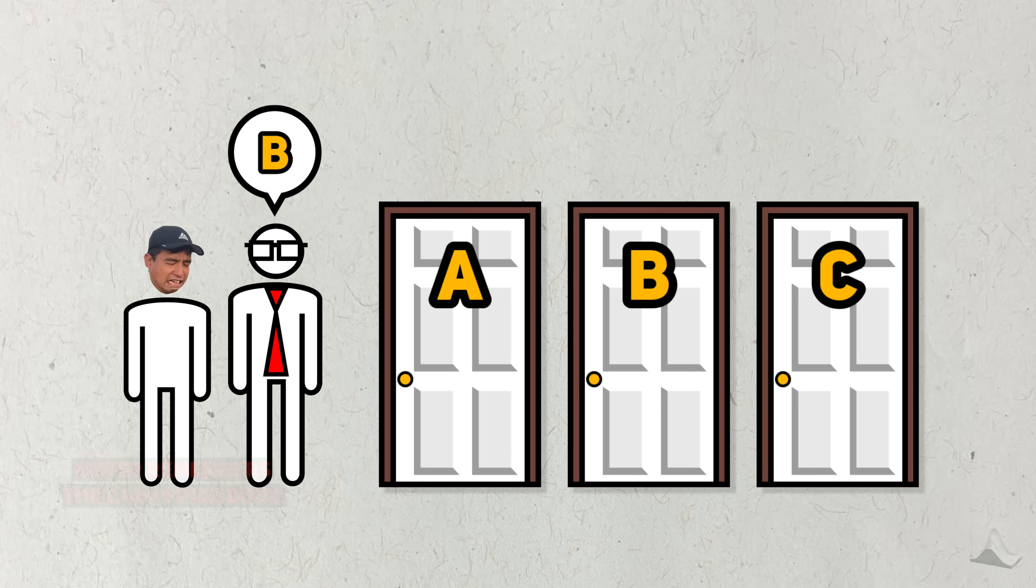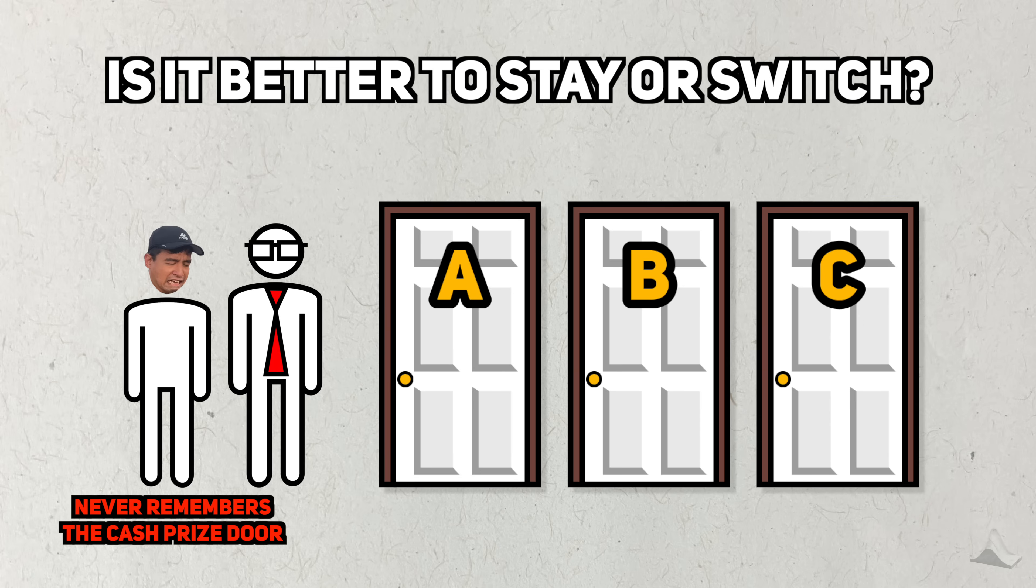As a result, I, I mean he, never actually remembers where the cash prize is. So he'll just pick one of the remaining doors at random. Knowing that, what would your strategy be? Is it still advisable to switch? Or is it better to stay? Does it even matter?